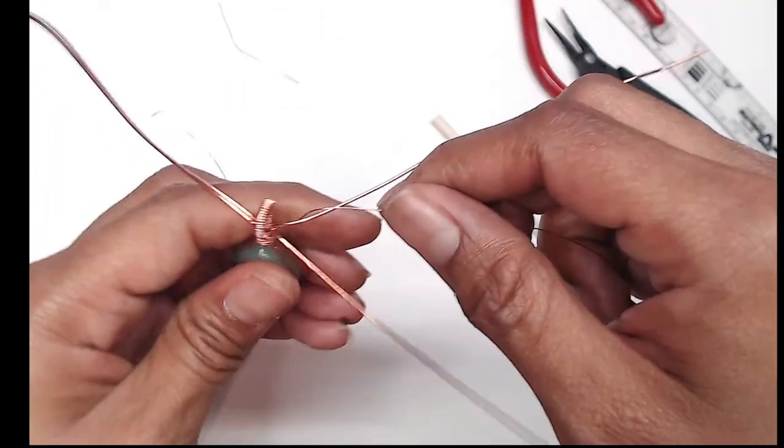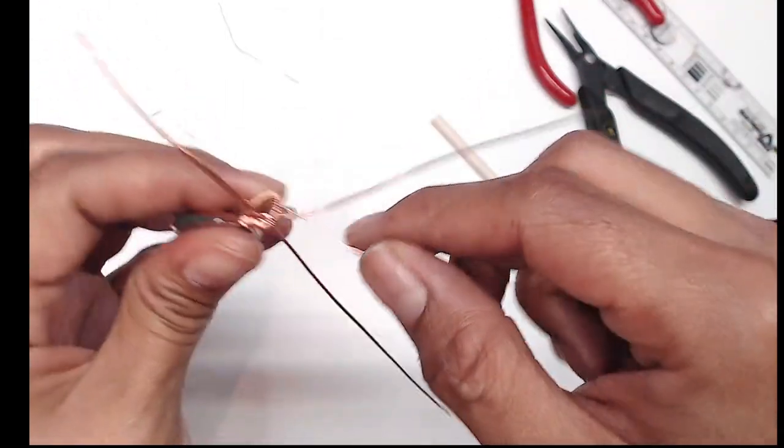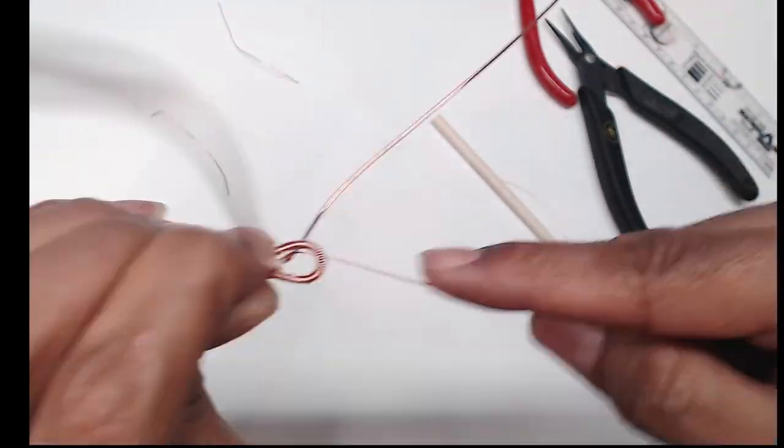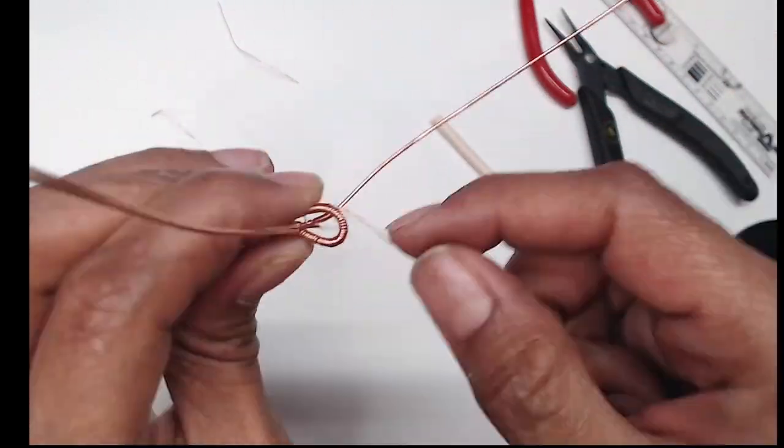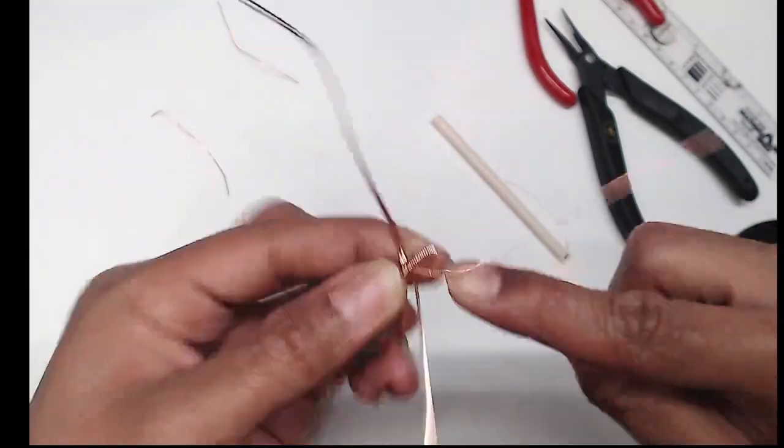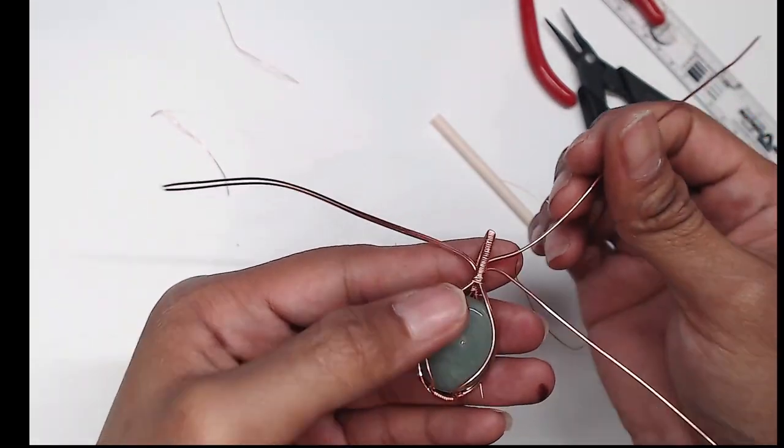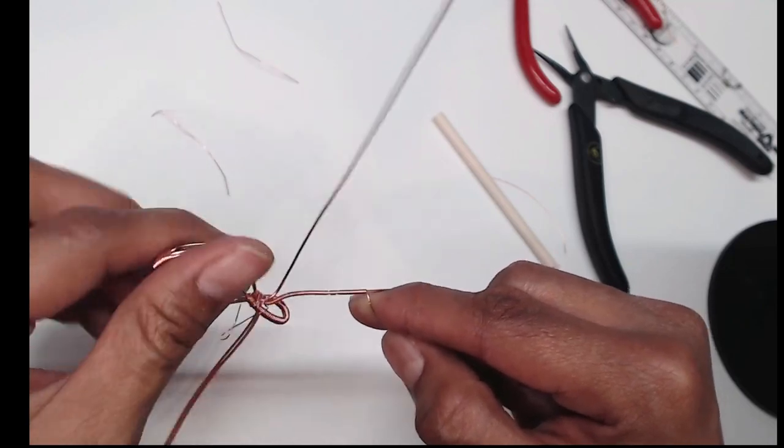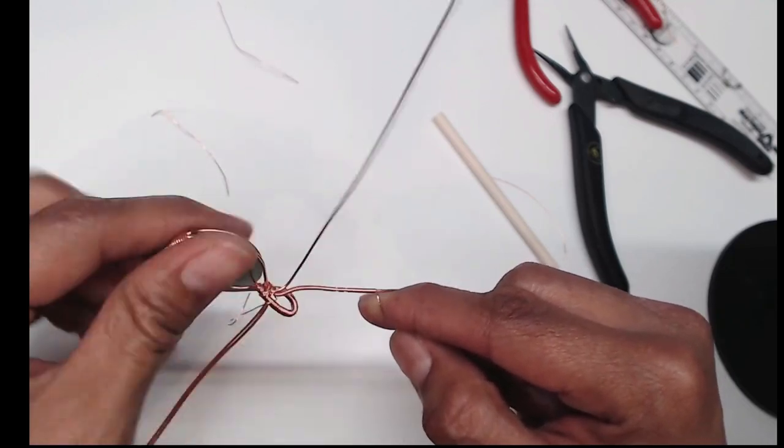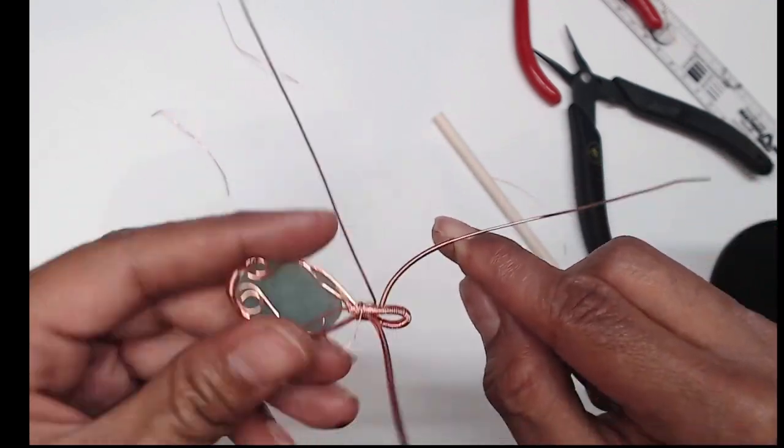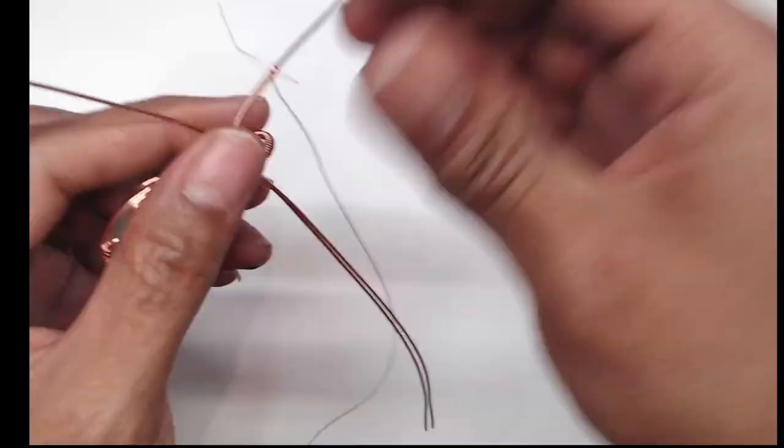Now we're going to grab our long 28 gauge wire. We're going to use this to create a coil around this back round wire. When you get to about this point you can easily start to coil by just spinning the pendant in place and holding your finger in place. Like this.